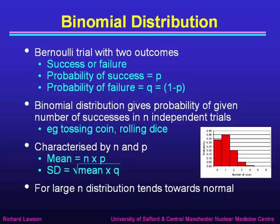The binomial distribution is due to Bernoulli trials with two outcomes: an outcome of success or failure. The probability of success we defined as p, the probability of failure was defined as q, which has to be 1 minus p, because p and q must add up to 1. The binomial distribution gives the probability of a given number of successes in n independent Bernoulli trials. We had examples of that like tossing a coin and rolling dice.